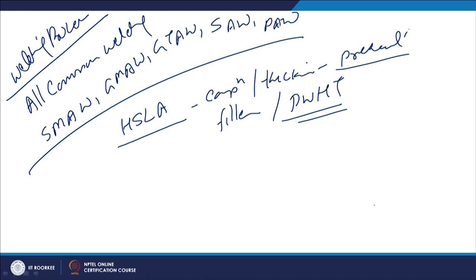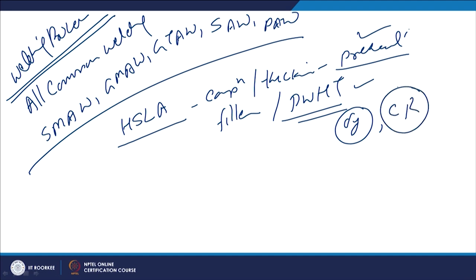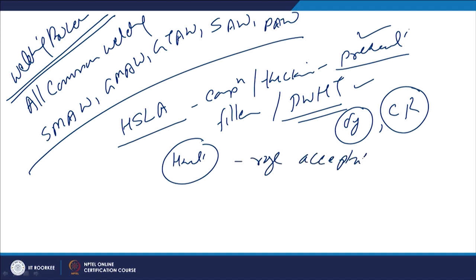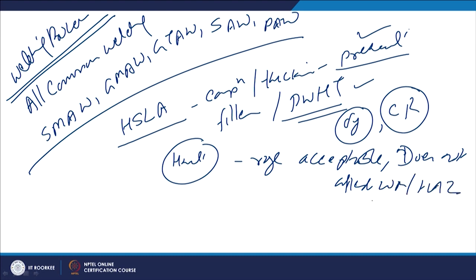Most welding processes can be effectively used for HSLAs with suitable combinations of preheat and filler metal, so that the required tensile strength and corrosion resistance properties can be realized. These processes offer a net heat input within a range that is acceptable and does not appreciably affect the weld metal or HAZ properties.